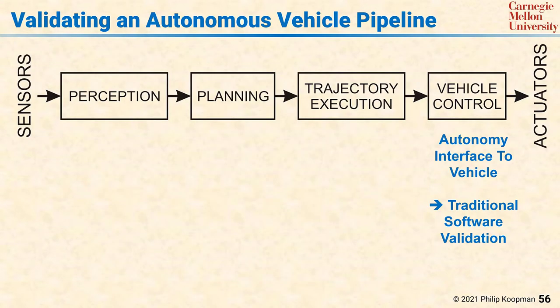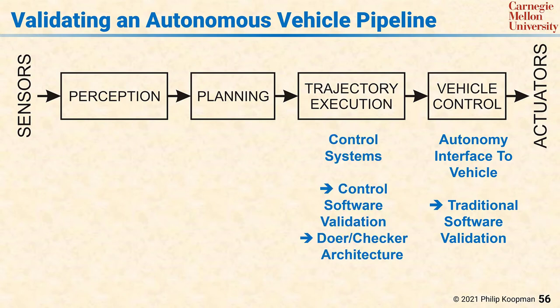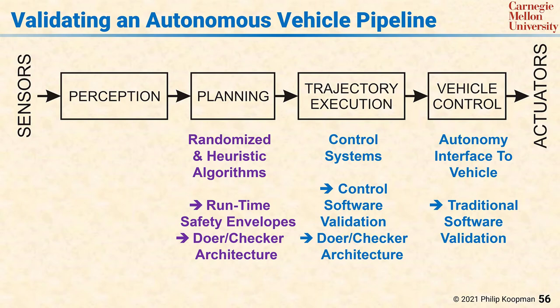Autonomous vehicles have different stages in a software control pipeline, and different techniques are suitable for use in each stage. At the vehicle control stage, this is traditional automotive software and traditional software validation techniques should work just fine. The trajectory execution stage is mostly traditional control systems, and control software validation ought to do fine — doer-checker architectural approaches can be helpful but are not strictly required. The planning stage is a bit more difficult because it uses non-deterministic, randomized, and heuristic algorithms in some cases. Runtime safety envelopes can be very helpful here paired with a doer-checker architecture.